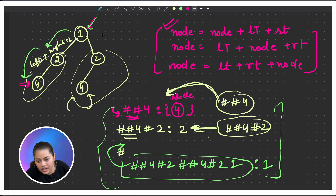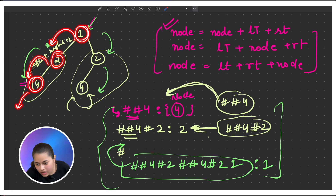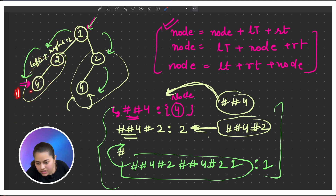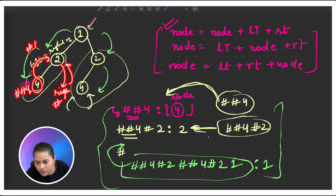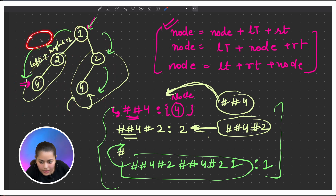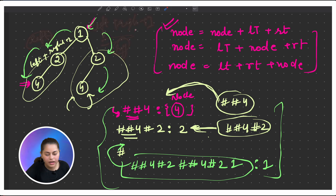Let's trace through the example. Starting from node 1, we go left to node 2, then left to node 4. Node 4 has no children so we get '#4#' — this is its unique key. We return back to node 2, explore its null right child returning '#', and build the key '#4##2' for the subtree rooted at 2. Then we do the same for the right subtree of 1, and the same keys appear again, confirming duplicates.